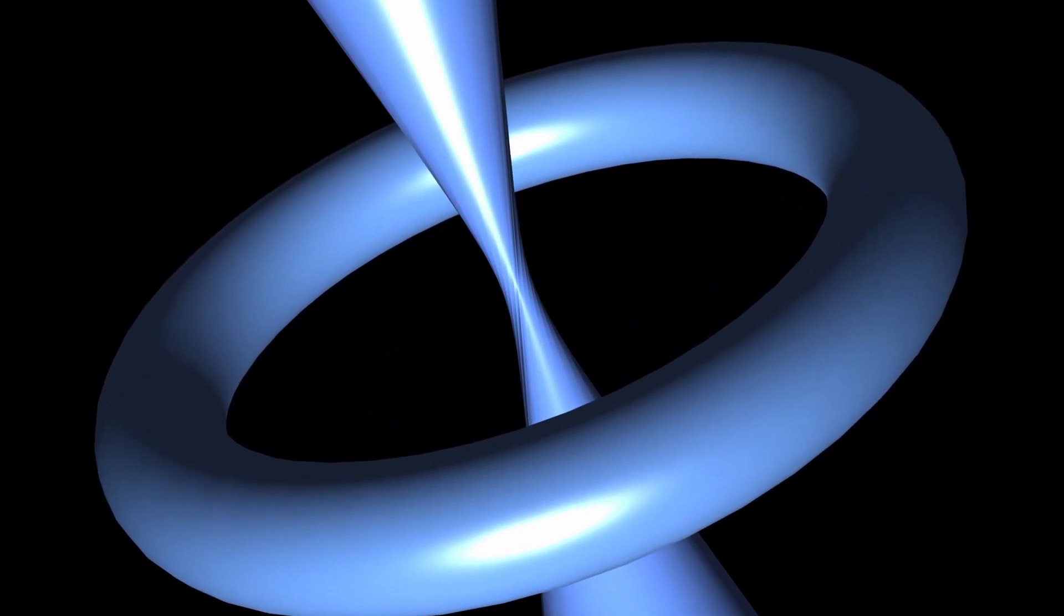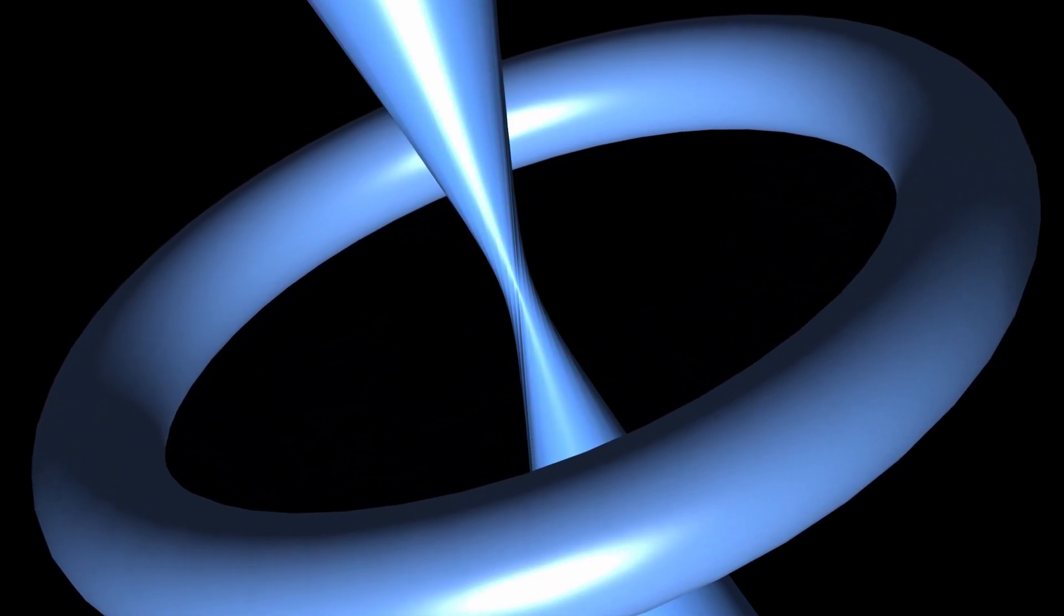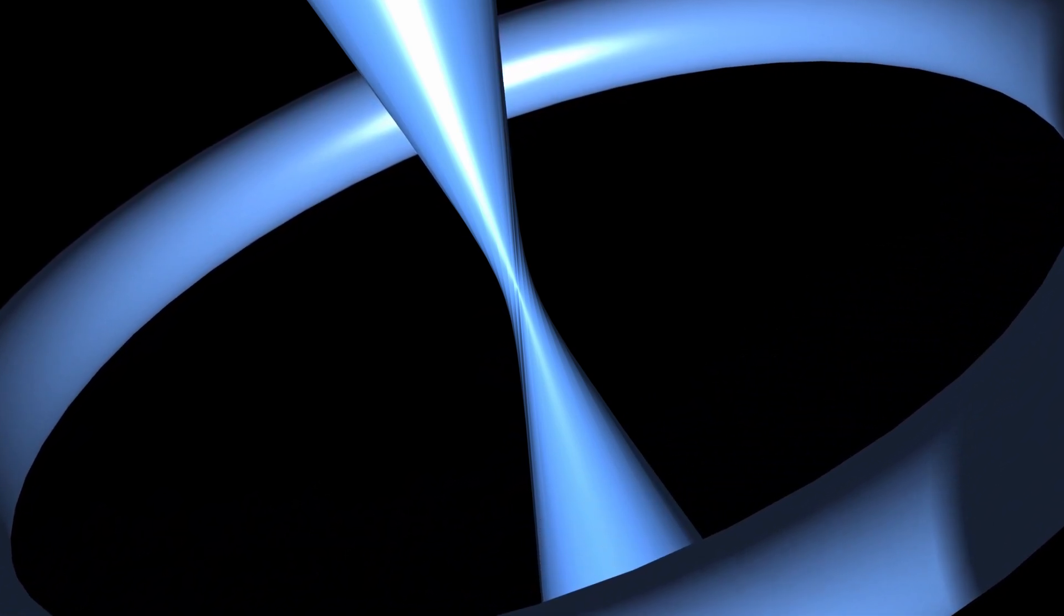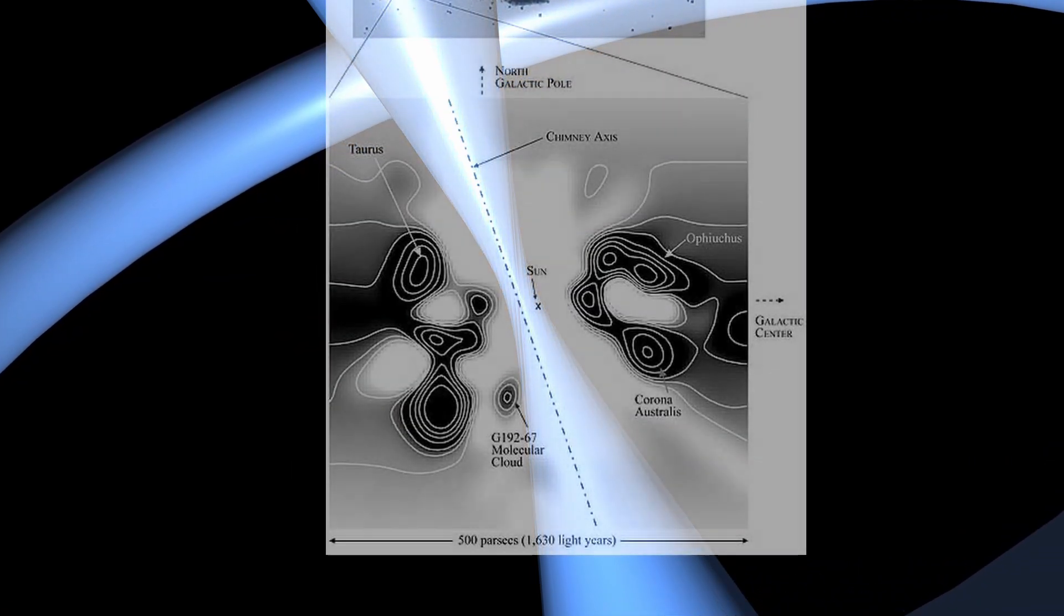When we examine the Gould belt, which is expanding away from this area, we see that they are all blue stars. And when we examine the edge of the chimney, we see there are variations in the types of stars that we see.